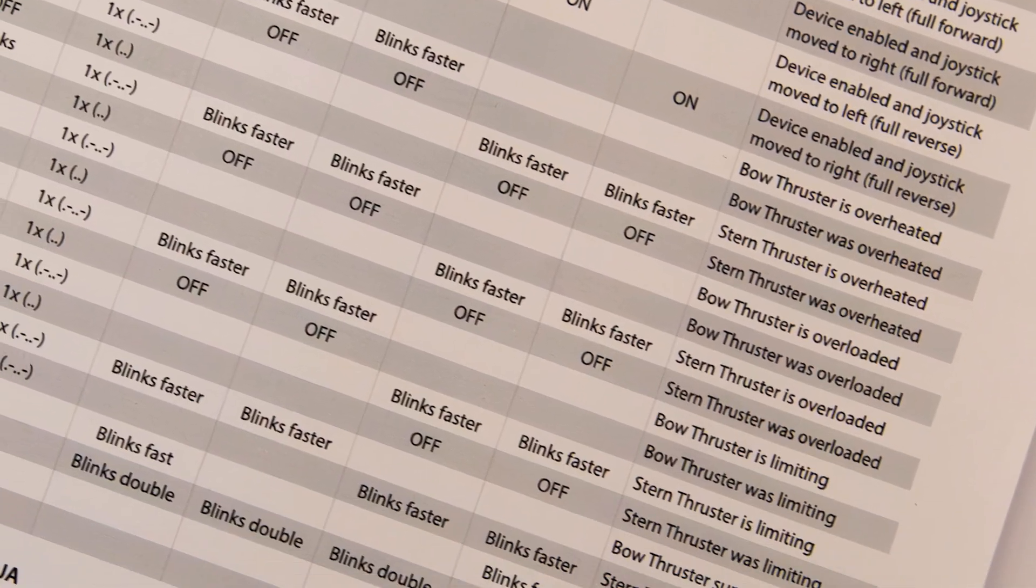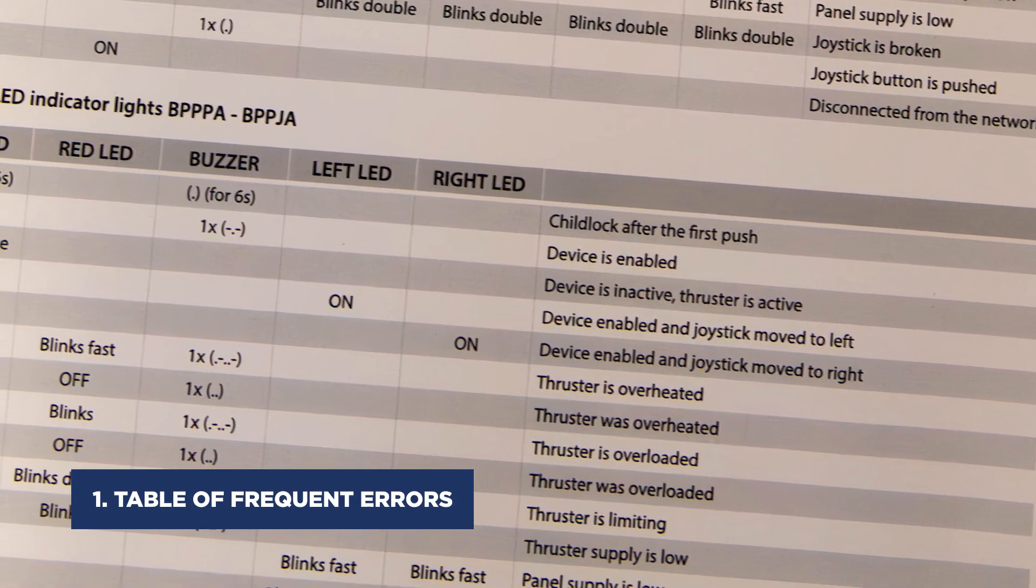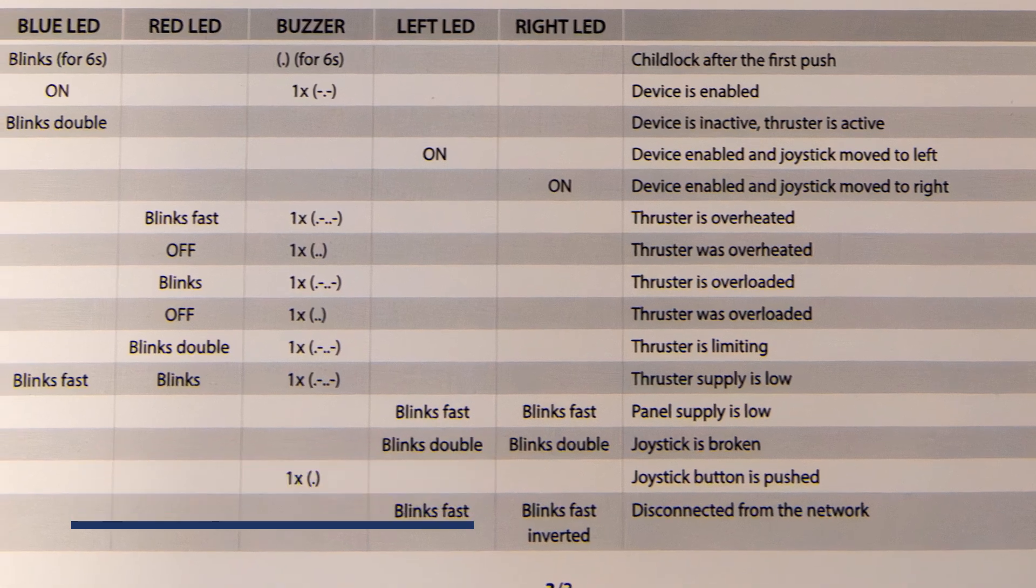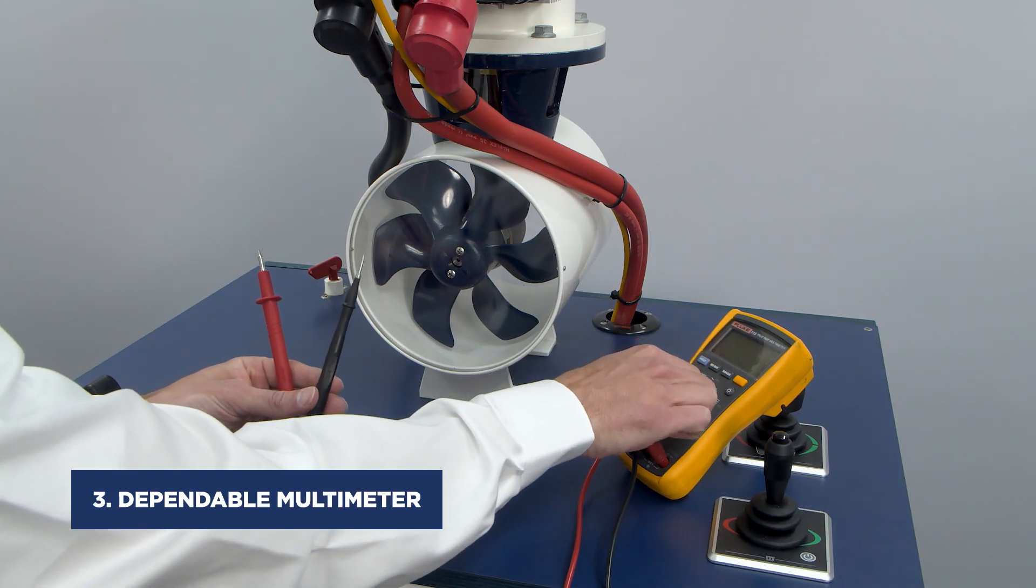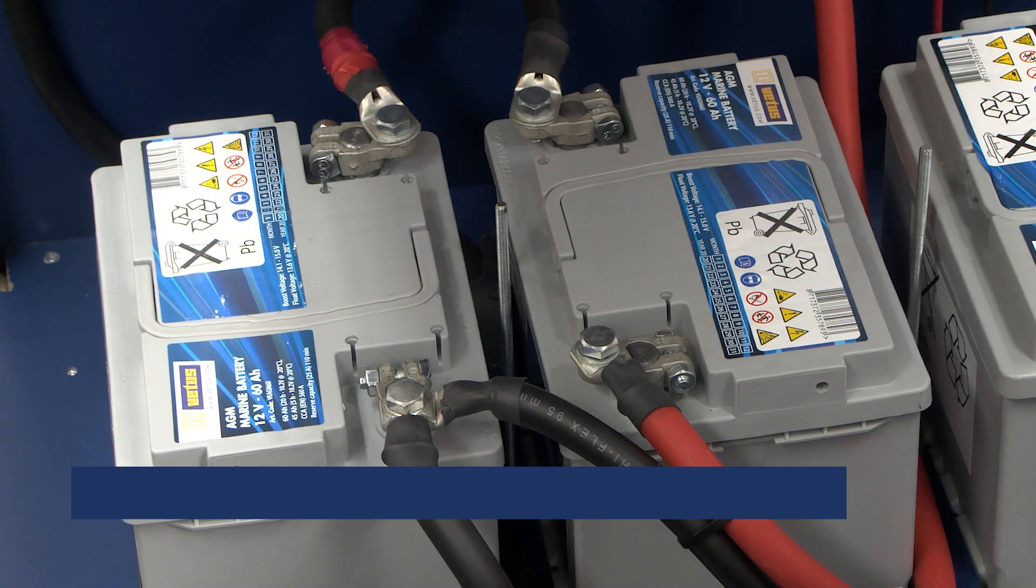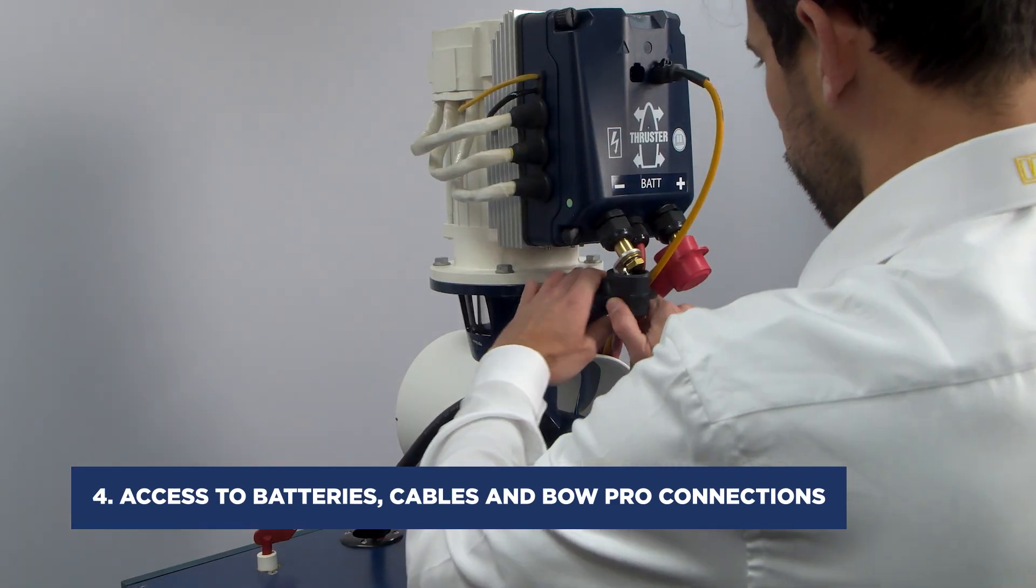Here's what you'll need: 1. The Vetus table of frequent errors. 2. BowPro assistance form. 3. A dependable multimeter. 4. Access to batteries, cables and BowPro connections.